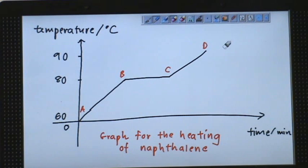And I would label them according to region AB, point B, region BC, point C, and region CD. So I would like to explain what happened at region AB.